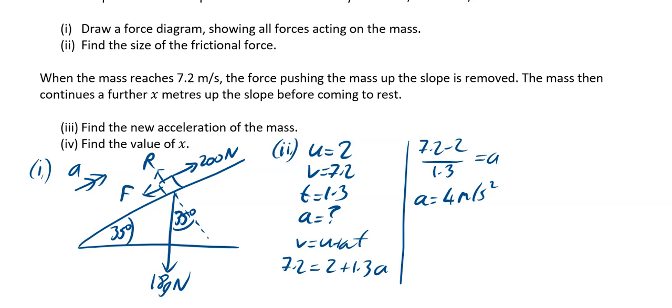Now what we need to do is find the frictional force. So we now know we've worked out that a is 4. So back to your diagram. And we're going to resolve parallel to the plane going upwards. And we're going to use force equals ma. I didn't say f because we've got this f mentioned here. We didn't want to confuse anything. So force equals ma. So going up the slope, you've got 200. Down the slope, you've got your f. But also, and this is one that people forget, down the slope, you also have the component of the weight, which is 18 sine 35, and that's equal to my mass, which is 18 times my acceleration, which we've just worked out to be 4.